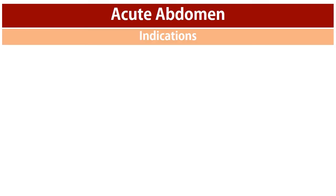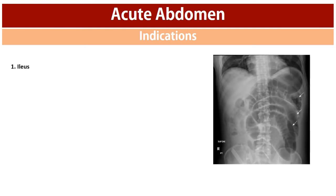The first indication is ileus, which is the term for lack of movement in the intestine that can lead to obstruction, meaning no food or gas can get through. Findings on x-ray include air-fluid levels and elevation of the diaphragm with dilation of the intestines, as seen in this image. This x-ray was performed in the supine position, and an upright view may also help us to see air-fluid levels if present.